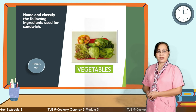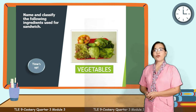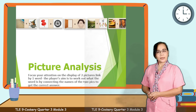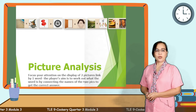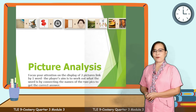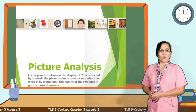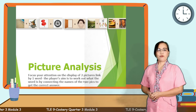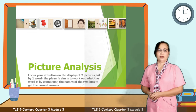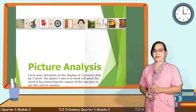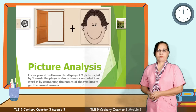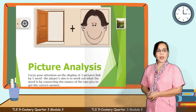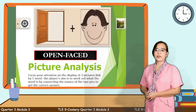And for you to have more fun, let's play more games. I know you are familiar with this. In this activity, you are going to identify what is in the picture. You have to focus your attention on the display of two pictures linked by one word. The player's aim is to work out what the word is by connecting the names of two pictures to get the correct answer. You have 5 seconds to figure out the word. Type your answer in the comment box. If your answer is open-faced, then you got it right. Good job!